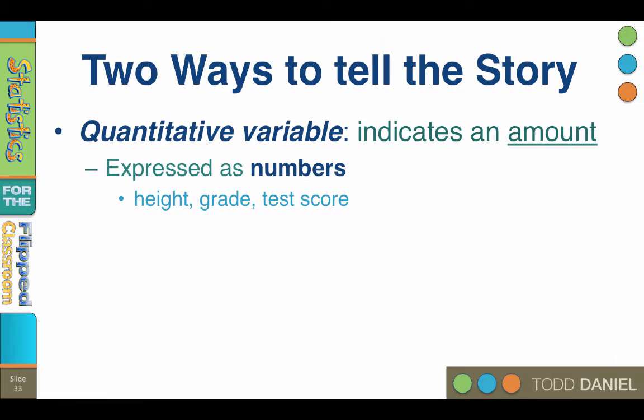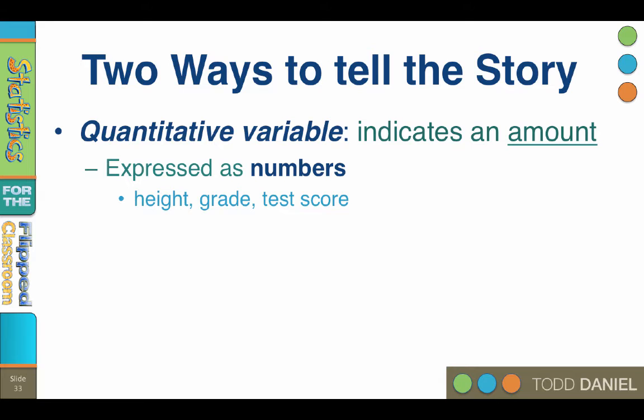Another way to describe variables is as quantitative or qualitative. A quantitative variable indicates an amount. Quantitative variables are expressed as a number, such as height in inches, test scores in point totals, or weight in pounds. Quantitative variables quantify an amount.